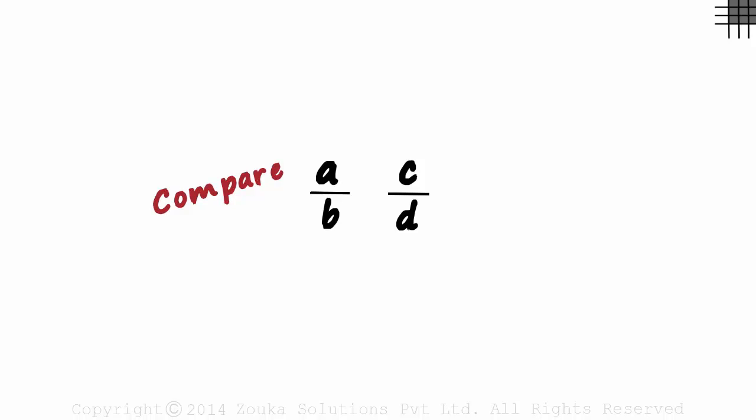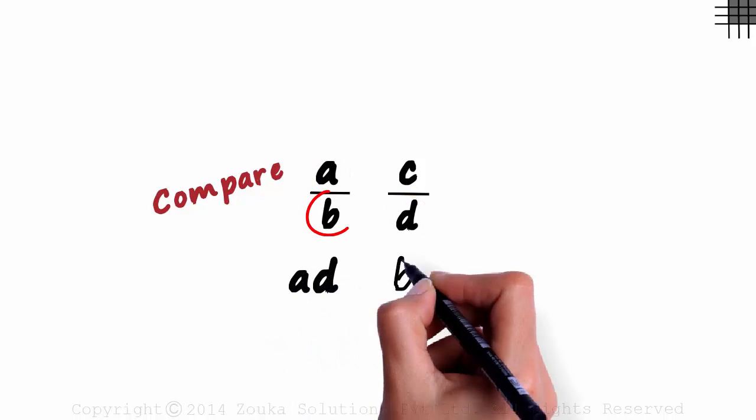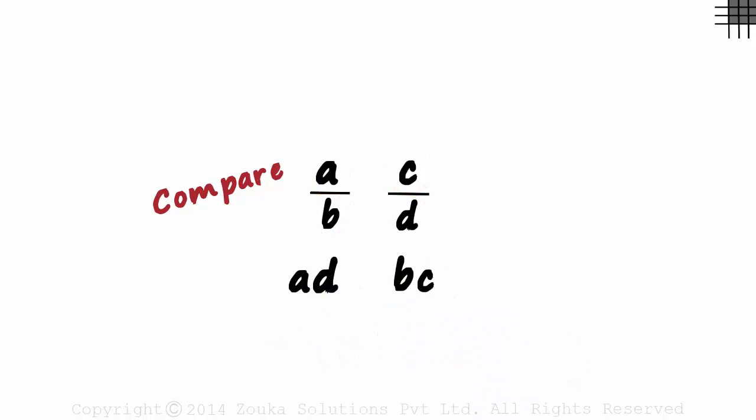But that's a long process and involves calculation of the least common multiple of the denominators. Instead, it's a better idea to compare the product of A and D with the product of B and C. Based on the value of these two products, we can easily say which one's greater.